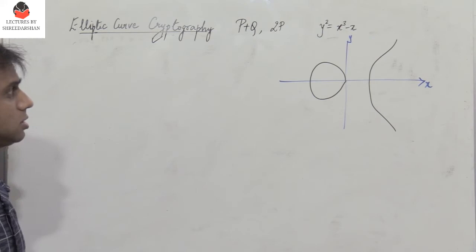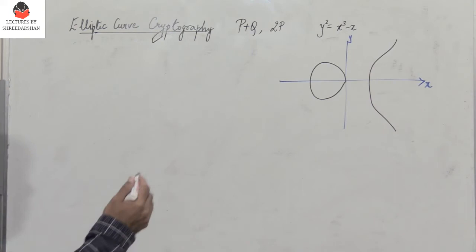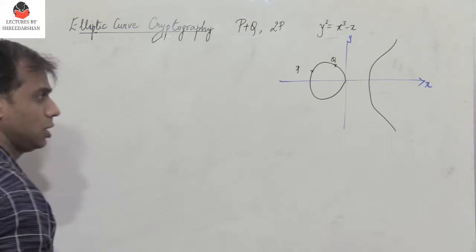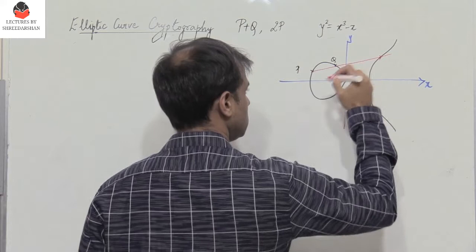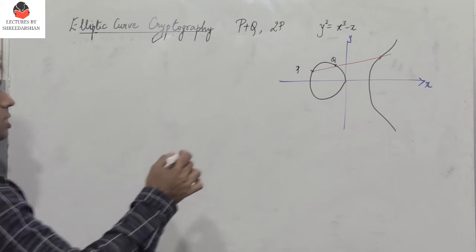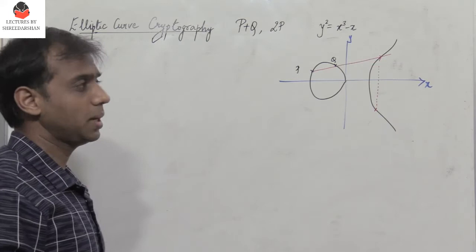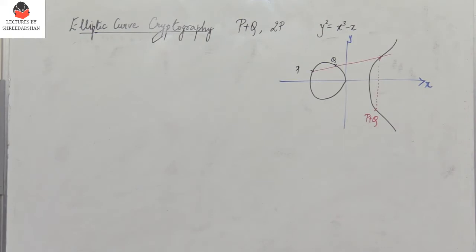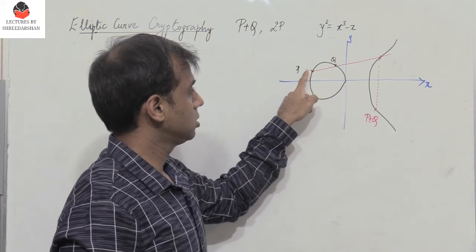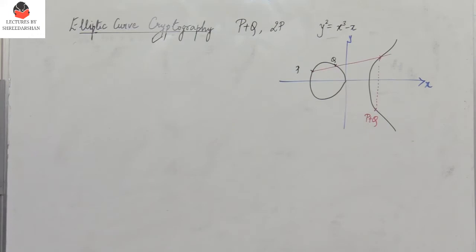Let us consider the elliptic curve y squared equals x cubed minus x. Now consider two points P and Q. If we join these two points P and Q by a line and extend it, it intersects the elliptic curve at one more point. Taking the mirror image of that point above the horizontal axis gives us the point P plus Q — that is, the point symmetric to where the line through P and Q intersects the curve.